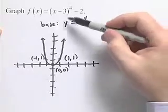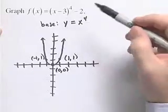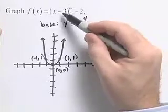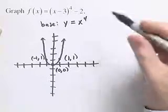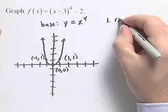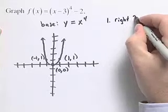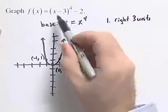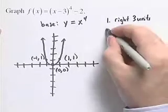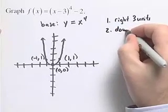Next we want to look at using our techniques for shifting, reflecting, and so on to graph this function. Looking at our function compared to the base function, we see that we need to do a shift right 3 units from the x minus 3, and then out here we have a minus 2, that's a shift down of 2 units.